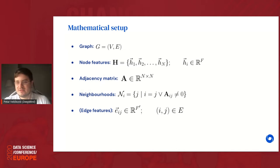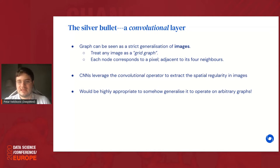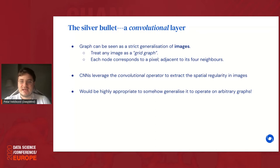The adjacency matrix may allow only a single scalar per edge, but if we have richer edge information we can also have edge feature vectors on any edge ij. Graphs can be seen as a strict generalization of images — you can treat an image as a grid graph where each node is a pixel linked to its four neighbors. A natural approach is to generalize what works well for images, like CNNs, to work on arbitrary graphs.